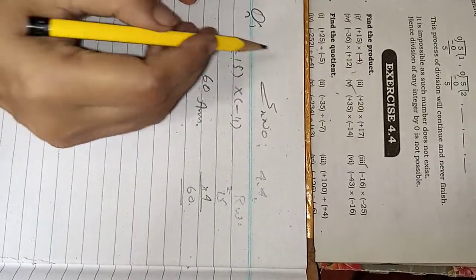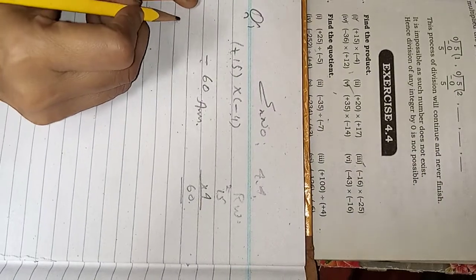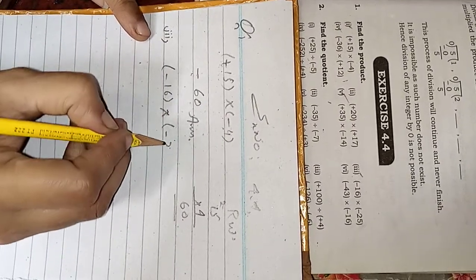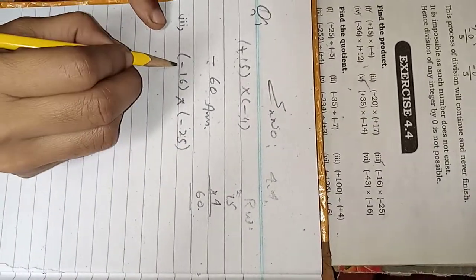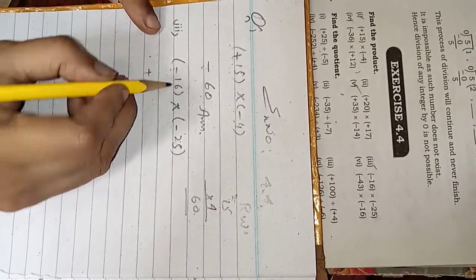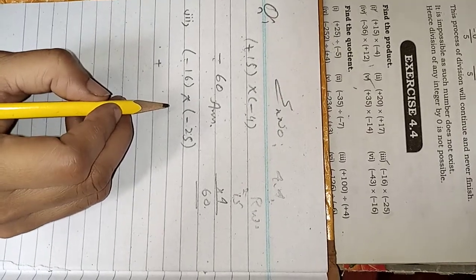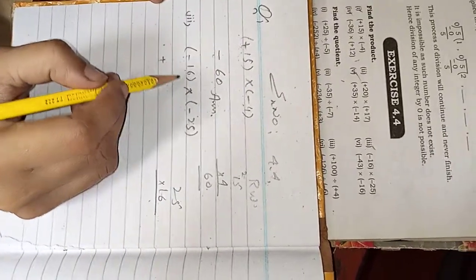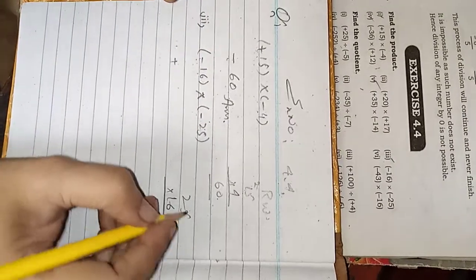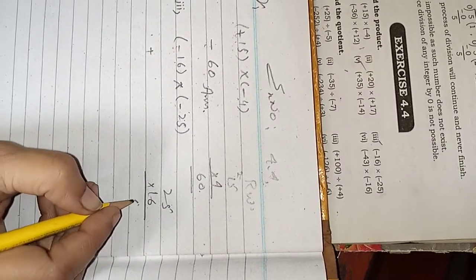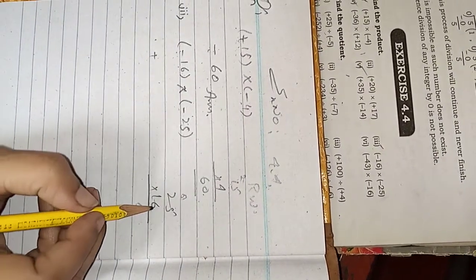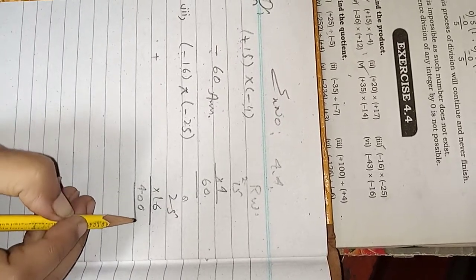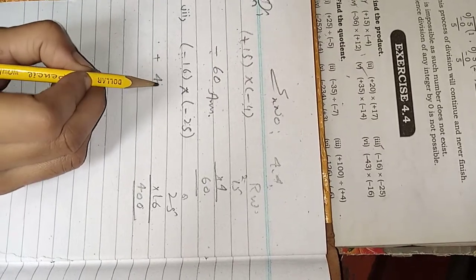After that, we will apply the third question. Minus 16 multiplied by minus 25. If we have minus minus, that's plus. 16 and 25 are big numbers for tables, so we apply it. The answer is: 5 times 16 is 80, 2 times 16 is 32, plus gives us 400. Minus minus equals plus and the answer will be 400.